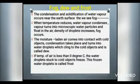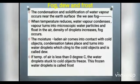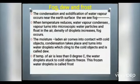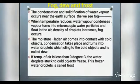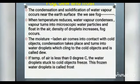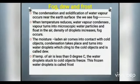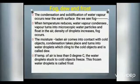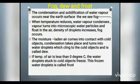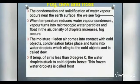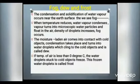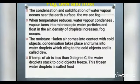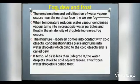We will now see what is fog, dew, and frost. When the condensation or solidification of water vapor in the atmosphere occurs near the earth's surface, we can see fog, dew, or frost. Frost is the particles of snow formed from the sublimation of water vapor at the surface. These are seen on plant leaves, window panes, etc.